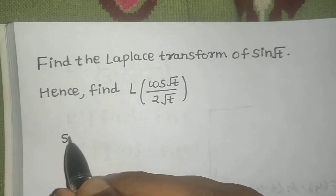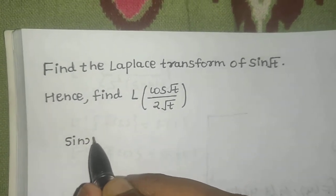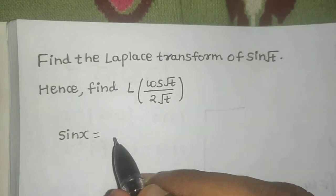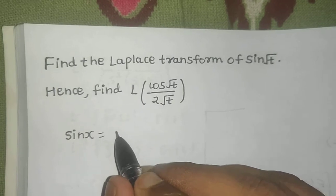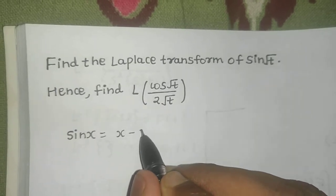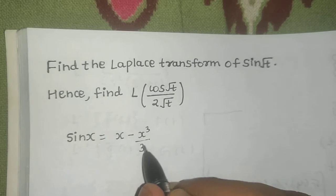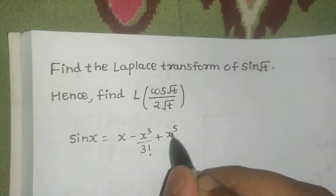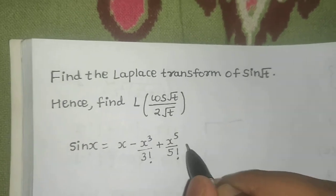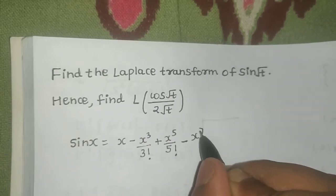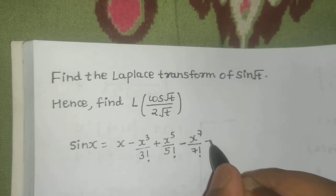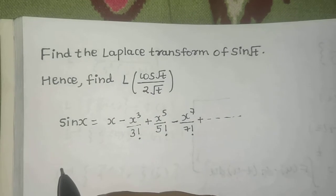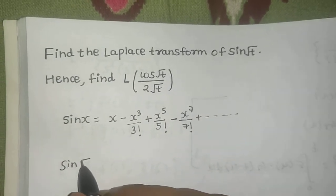For solving this question we need to know the expansion of sin(x). You can do this expansion with the help of the Maclaurin series, and it will come out to be x minus x³/3! plus x⁵/5! minus x⁷/7! and so on.